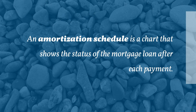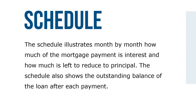An amortization schedule is a chart that shows the status of the mortgage loan after each payment. The schedule illustrates, month by month, how much of the mortgage payment is interest and how much is left to reduce the principal. The schedule also shows the outstanding balance of the loan after each payment.